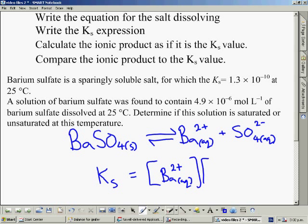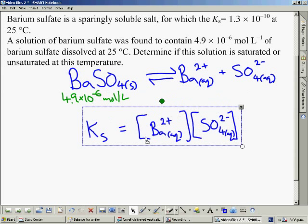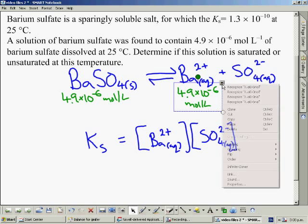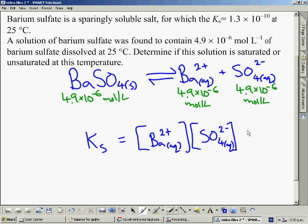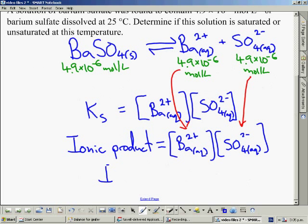The equation for barium sulfate dissolving is this. We can then write the KS expression that matches it. In this question, we're told how much salt is dissolved in one liter of volume. If we know that number, we can work out the concentrations of the two ions once it has dissolved. Because there are one to one mole ratios with the ions and the salt, the ion concentrations is going to be the same as the salt concentration. With those two ion concentrations, I can put them into the ionic product expression, which is exactly the same as the KS expression.